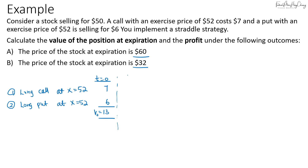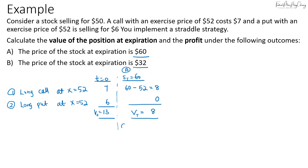When the option expires in Scenario A, if the spot price is $60, the call option can be exercised, so the payoff would be $60 minus $52, giving us $8. The put option is out of the money, so the value of the straddle strategy is $8, and the gain is $8 minus $13, which is negative $5 — so instead of a gain, it's a loss of $5.